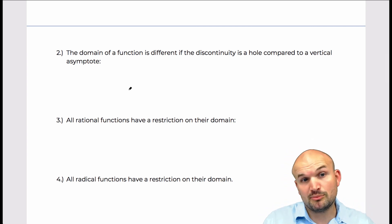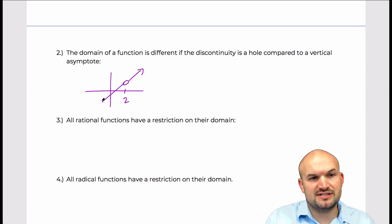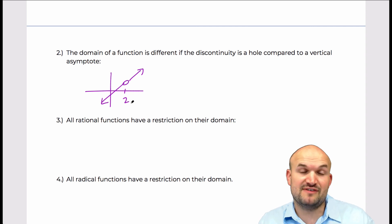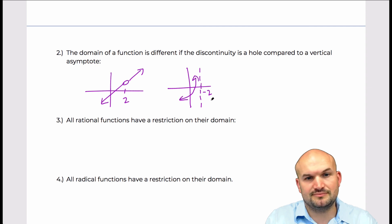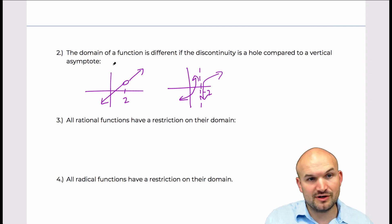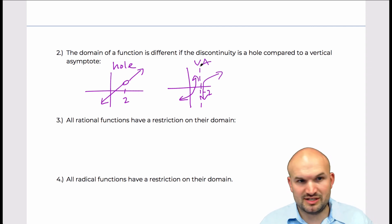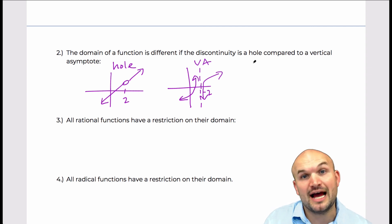I think it's important to look at the graphical approach as well as the algebraic. If we're looking at a graph here and we look at the number two — this graph has a hole at two, so the domain is defined for all real numbers except two. Whereas this graph has a vertical asymptote at negative two. You can see that both these functions are defined for all real values except negative two. It doesn't matter which one is which — the domain is exactly the same for both functions.